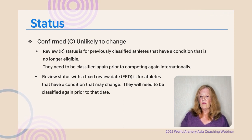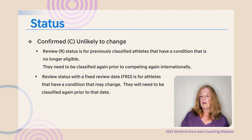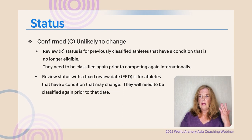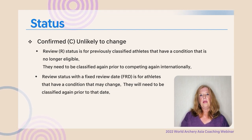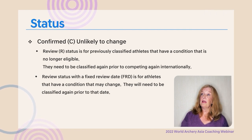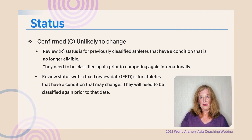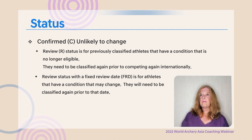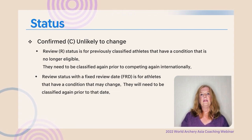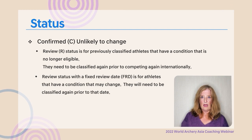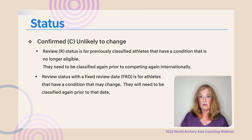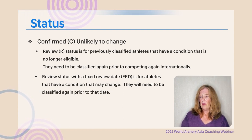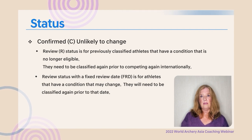Review with a fixed date status is for conditions that might change — for example, a head injury less than two years ago, or a condition like multiple sclerosis that changes over time, requiring reclassification by the date listed on the card. Importantly, athletes must be classified before that date or they are not allowed to compete as a para archer. If a fixed review date falls in the middle of a tournament and the athlete has not been classified beforehand, they cannot compete.